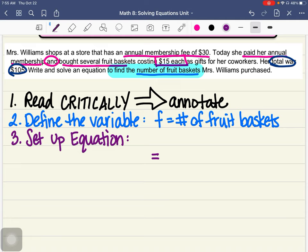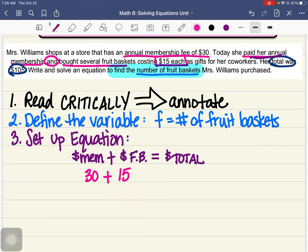So here's how I'm going to set this up. I know what equals what. She paid her annual membership and bought several fruit baskets. So I know that she paid for the money for her membership plus the money for the fruit baskets. I know she paid for those all together and the total is what it's going to equal, was $105. So that's going to equal the total amount she paid. And from here, I can put in the numbers. So according to this, the annual membership is $30 plus $15 for every basket. So that's 15 times however many baskets she bought, which we don't know, that was F.